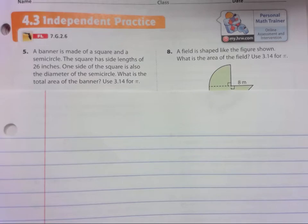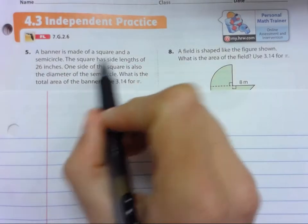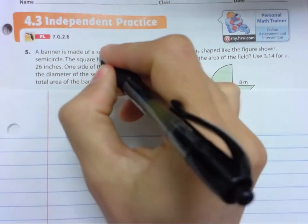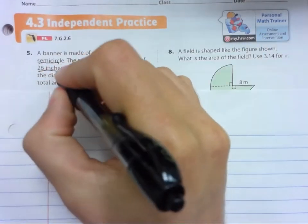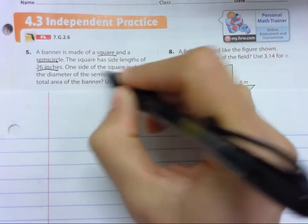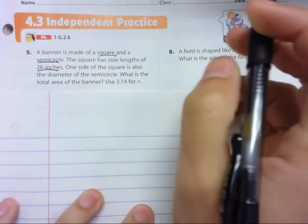Let's take a look at page 281 problem number 5. A banner is made of a square and a semicircle, so we have a square and a semicircle. It's a banner. The square has side lengths of 26 inches. One side of the square is also the diameter of the semicircle. What is the total area of the banner?